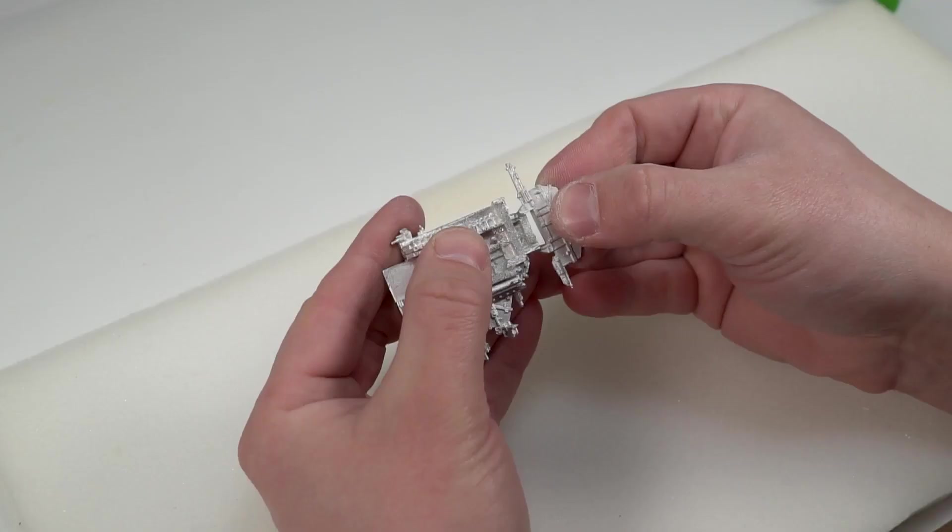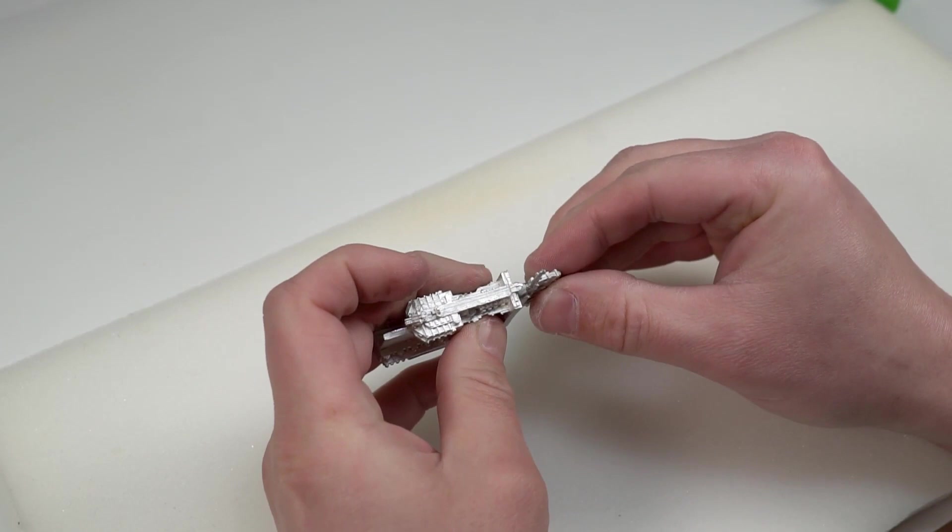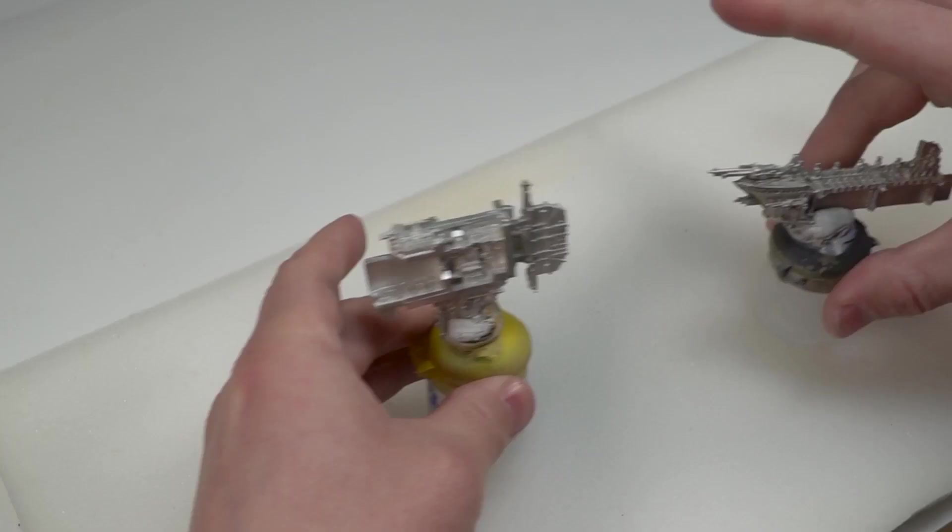Things that you will want to look out for are flash and little tiny pieces of metal that are created from the gate, vent and exhaust points on the initial mold itself.